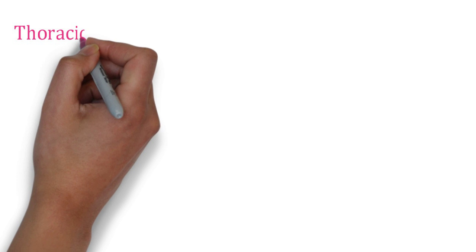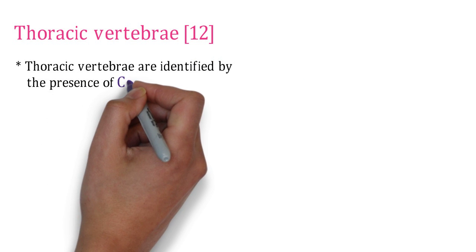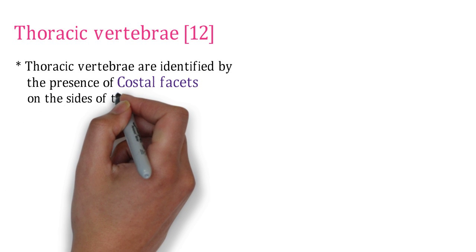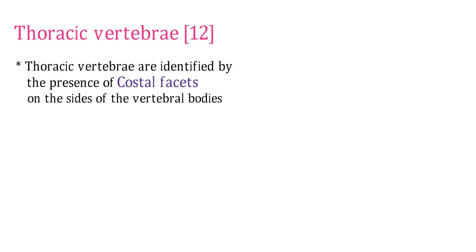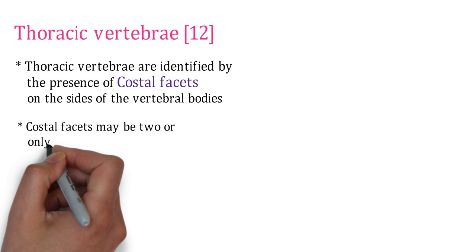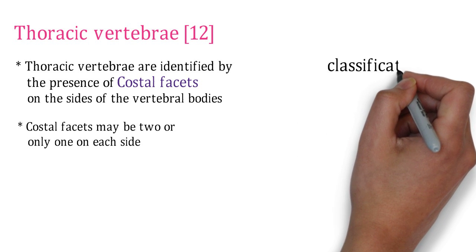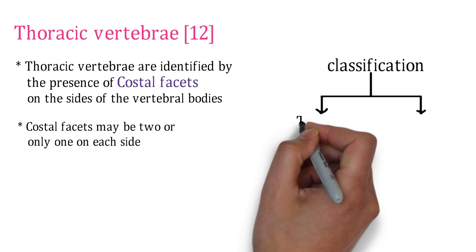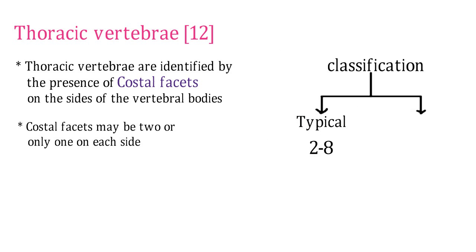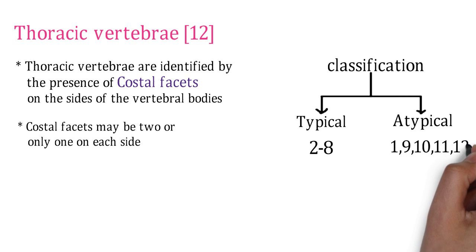Welcome to Med Tube. Today we are going to discuss the skeletal structure of thoracic vertebrae. Thoracic vertebrae are identified by the presence of costal facets on the sides of vertebral bodies. The costal facets may be two or only one on each side. There are 12 thoracic vertebrae, out of which 2 to 8 are typical and the remaining — 1, 9, 10, 11, 12 — are atypical.